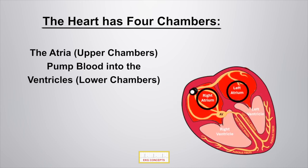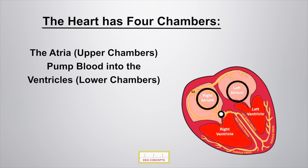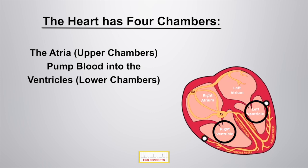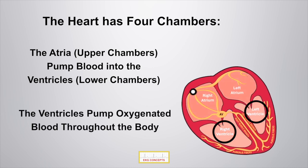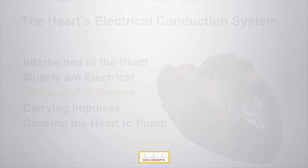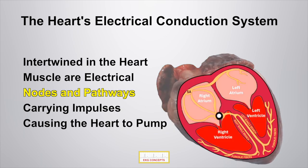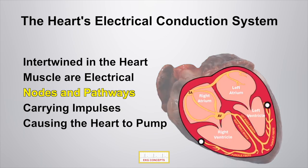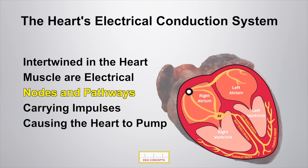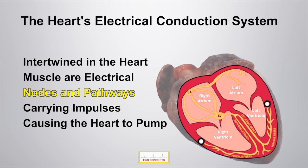The atria, located in the upper chambers, are responsible for pumping blood into the ventricles, which are located in the lower chambers. The ventricles pump oxygenated blood throughout the body. Intertwined in the heart muscle are electrical nodes and pathways, creating a circuit board that carries electrical impulses throughout the heart.